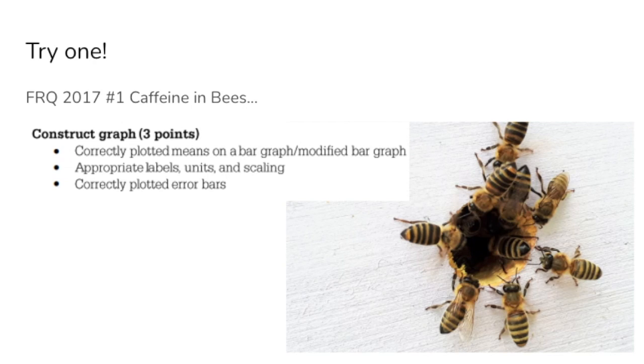And if you're interested in practicing graphs or looking at experimental designs, try this 2017 FRQ about caffeine in bees. I'll put the link to that in the description below, but this is easily available on the College Board's website. When you're making your graph, make sure you think about these three things. You would get three points for creating this graph with correctly plotted means on a bar graph or a modified bar graph. Now I'm telling you this ahead of time, but on the exam, you may not know which type of graph you need to design until you look at the question itself. You will need to make sure you have appropriate labels, units, and scaling, and then of course, correctly plot the error bars.